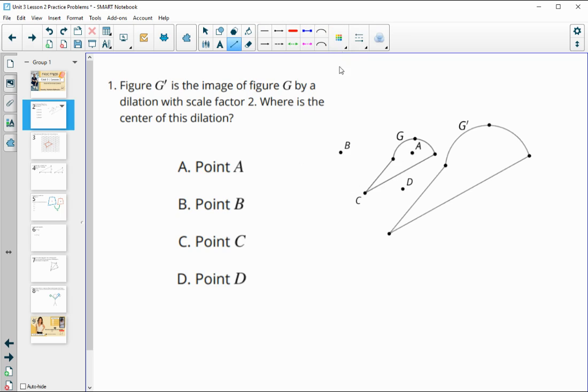Remember for center of rotation, you should be able to connect the original to the image on a line that connects to the center. So if we start at our image, go back to our original, and keep extending, that will help us find the center of dilation, which in this case is point B. If you look, you could keep extending that, going through this original to this image and here to here. So all of those points are coming out of B. So B is the center of dilation.